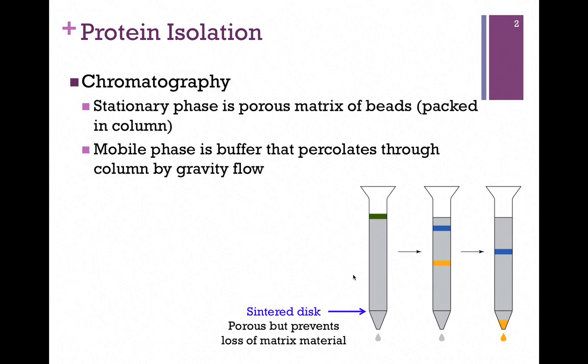Perhaps the most commonly used method of protein isolation is chromatography. The name comes from the fact that initially it was used to separate colored compounds. In chromatography, we have a stationary phase and a mobile phase, and in this case, we're looking at the example of column chromatography.